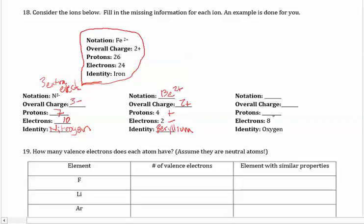The third one on here tells us that it has 8 electrons and that it's oxygen. So the notation for oxygen is a capital O on the periodic table. And oxygen on the periodic table is number 8, so it has to have 8 protons. And since it has 8 protons and 8 electrons, I know that this thing has to be neutral.